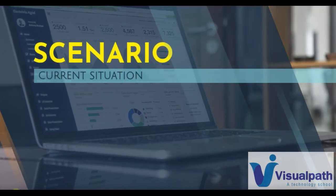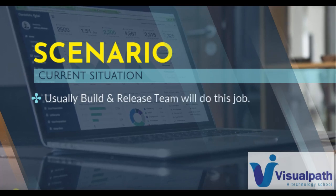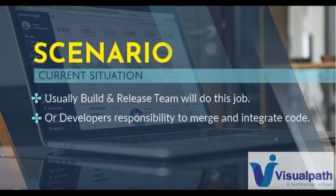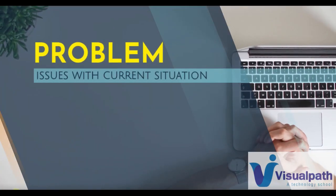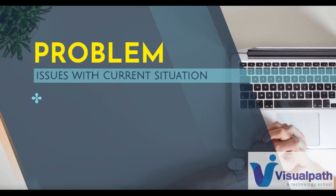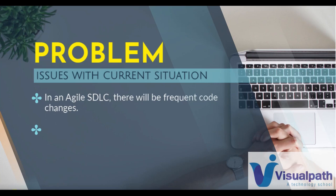Usually in an enterprise, there will be a separate build and release team who will be doing this job of building, testing and releasing the code. Or if it's a small industry, then it will be the developers' responsibility to merge and integrate this code. There are regular code changes, also called commits or pull requests. Developers will be dependent on the build and release team to test the code and move it to the next level in the release cycle.